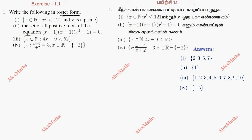Subdivision 1: x belongs to natural numbers, x squared less than 121, and x is a prime. So if we now have the first natural numbers, we will list them here.